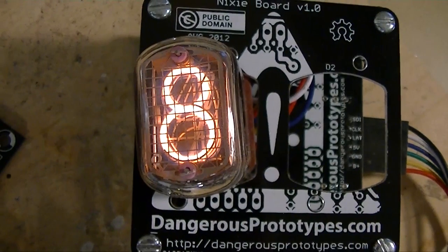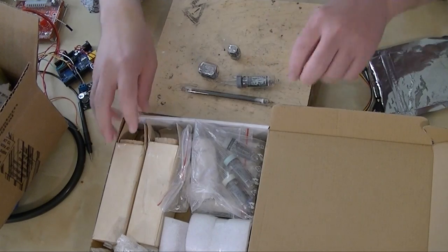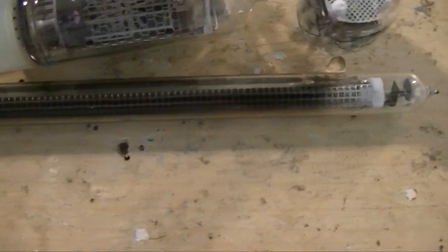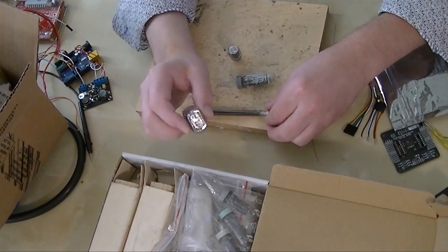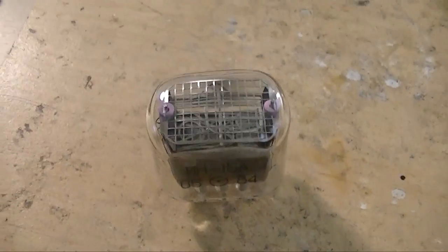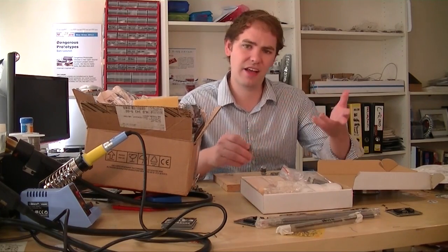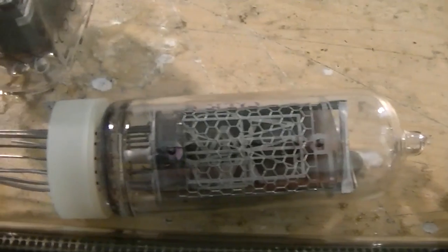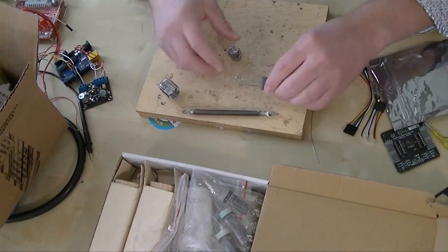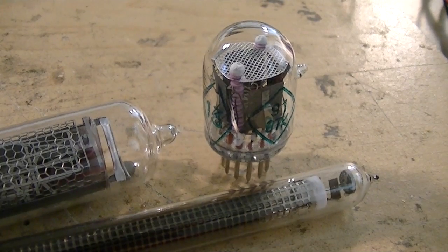We've got a selection of them here. I've got four different types: a long bar tube, a common IN-12 digit Nixie, some of these with characters instead of numbers inside. I like those, those are my favorites. Here's a stand-up type and here's a little tiny IN-2.